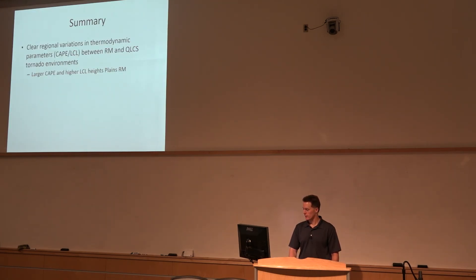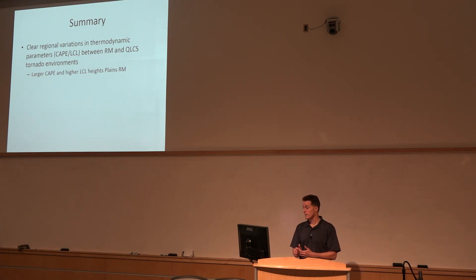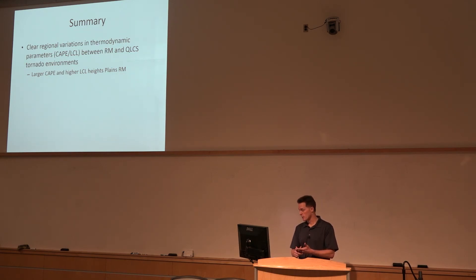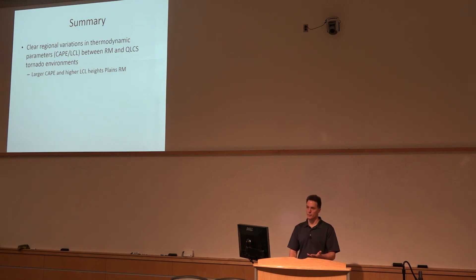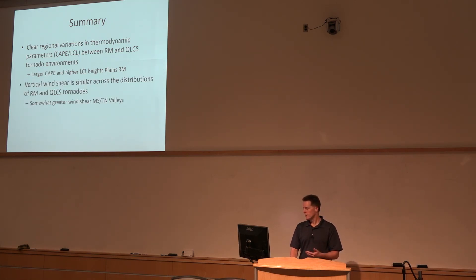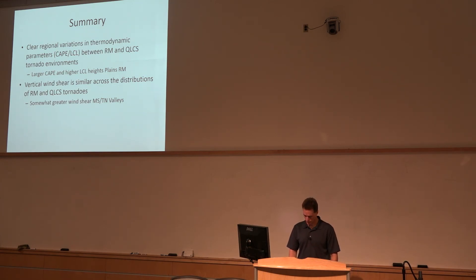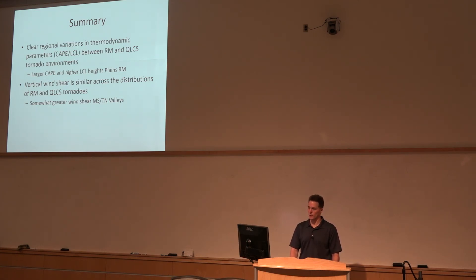To summarize: we do have clear regional variations in these parameters, and they vary between modes and regions. The CAPE and LCL on the plains tends to be the standout difference. For vertical shear, other than a slight tendency for stronger low-level shear toward the Mississippi-Tennessee Valley region, it is uniformly strong across both tornadic environments over broad areas.